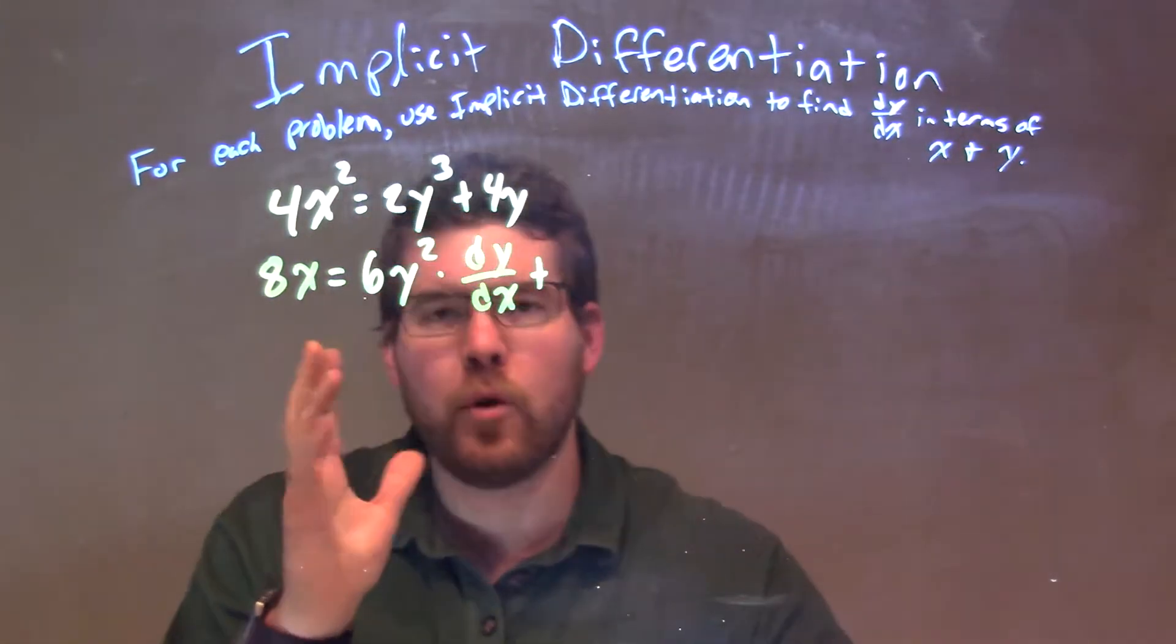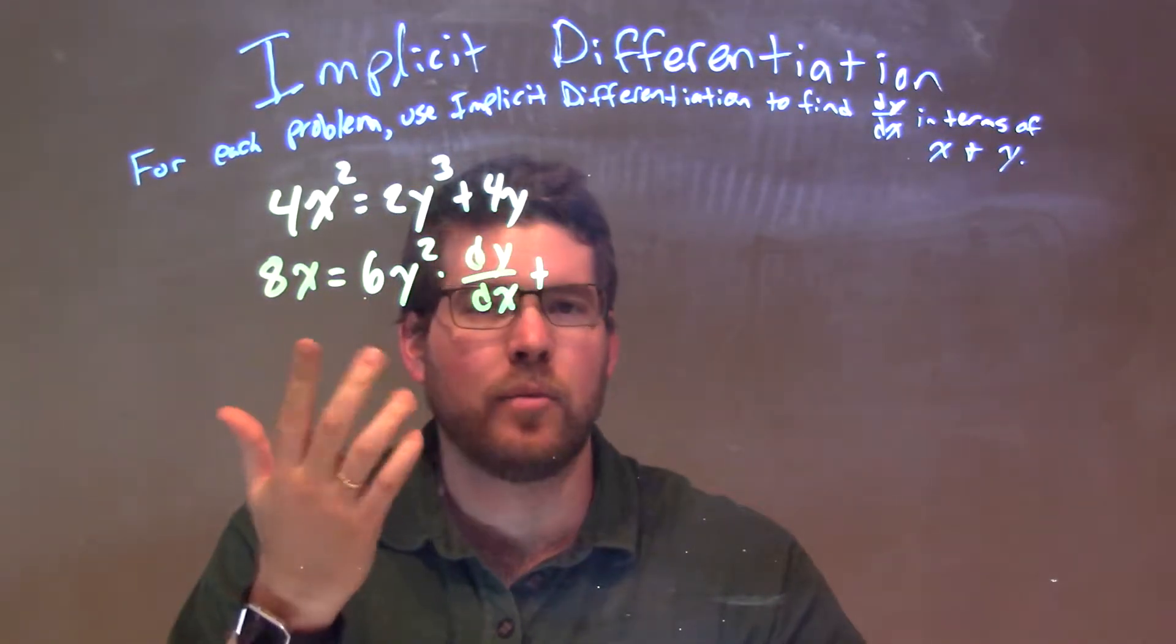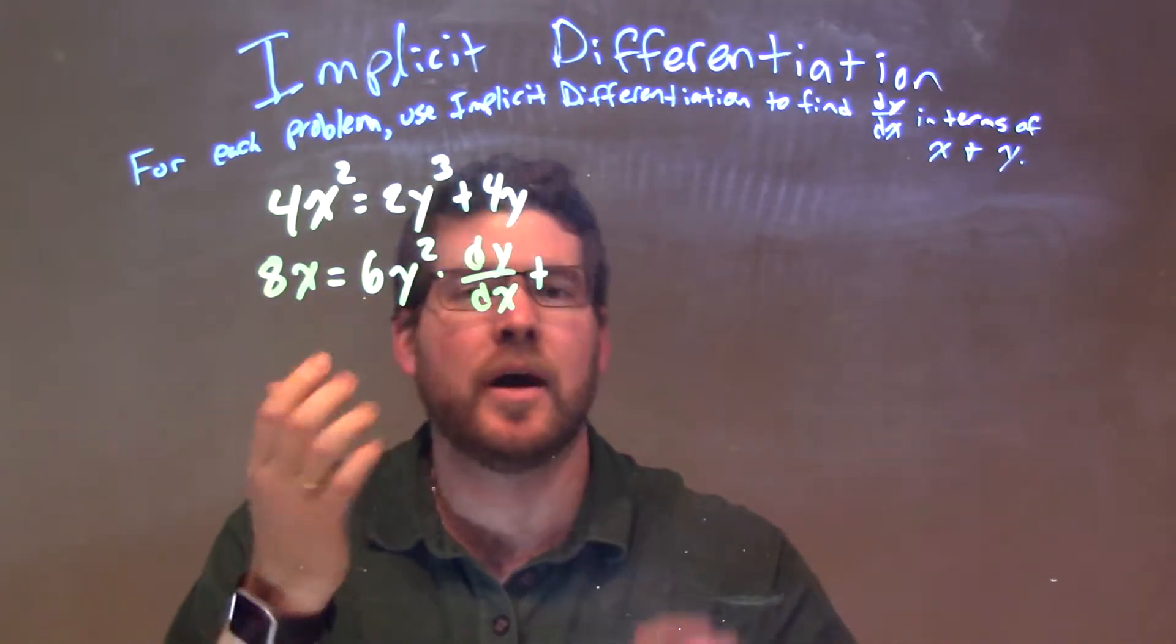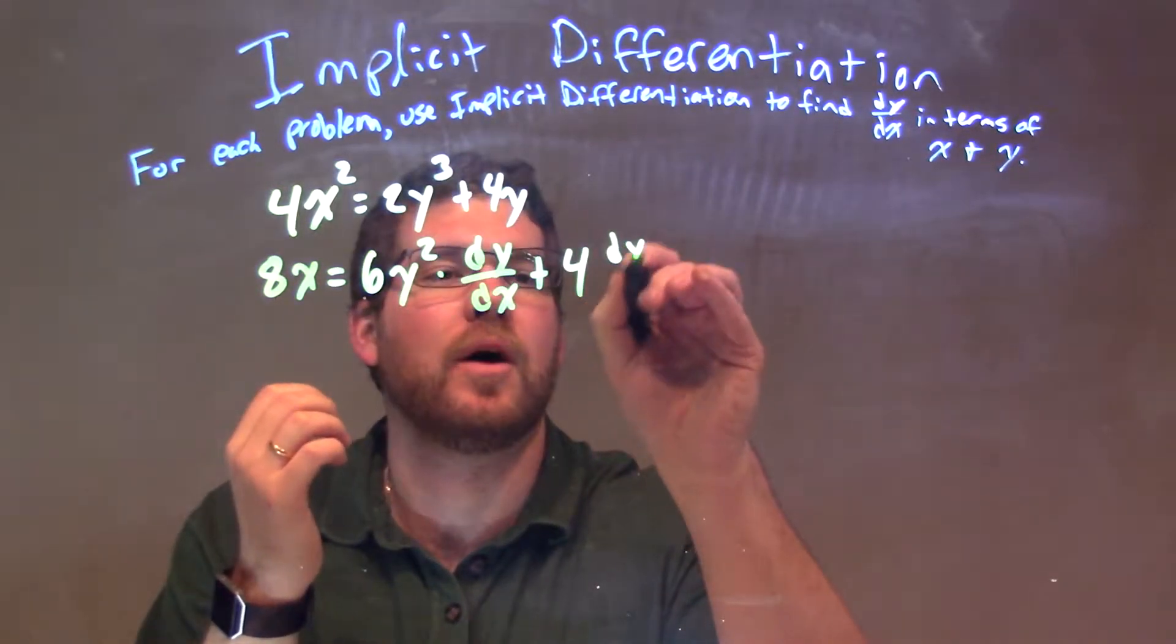Plus, now, 4 being a constant, we kind of put it out in front, 4 times, well, derivative of y is dy/dx. So, we have 4 dy/dx here.